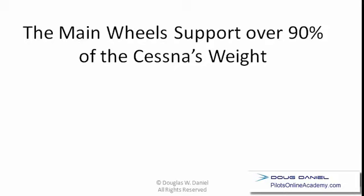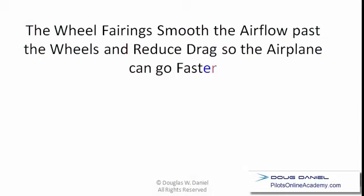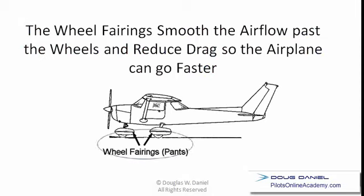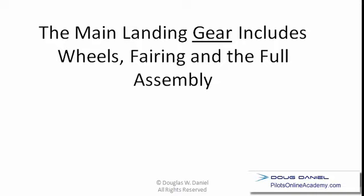The main wheels support over 90% of the Cessna's weight, also called the mains. The wheel fairings smooth the airflow past the wheels and reduce drag so the airplane can go faster — also known as wheel pants, but most commonly the wheel fairings. The main landing gear, just like the nose gear, includes the wheels, the fairing, and the full assembly.